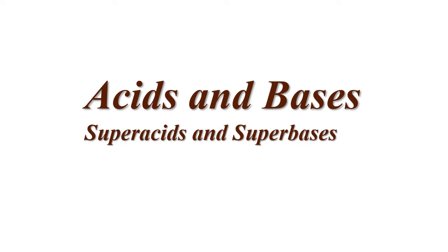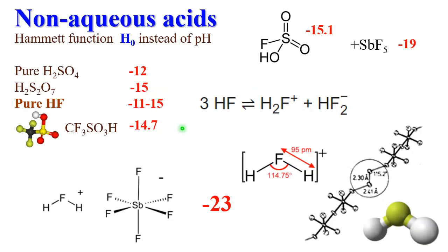The same is true for bases. When you are moving from water to non-aqueous solutions, you need to use the so-called Hammett function, H₀, instead of pH, which is a continuation of the pH scale outside the usual range of 0 to 14.